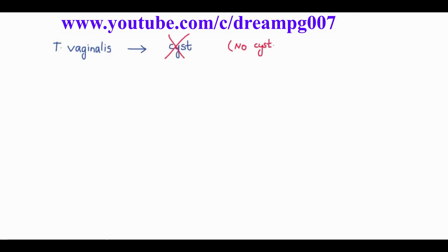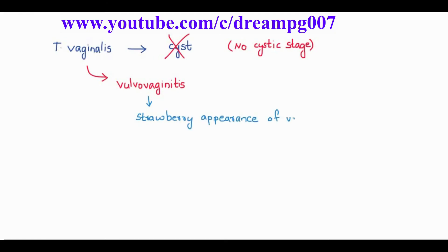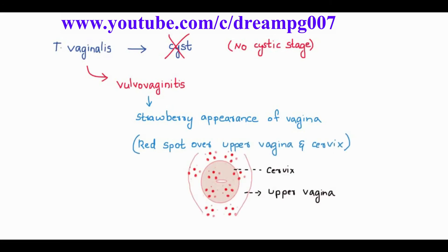Trichomonas vaginalis does not have a cystic stage. The trophozoietic stage of trichomonas vaginalis causes vulvovaginitis. It is characterized by a strawberry appearance of the vagina. Here we can see red spots over the upper vagina and the cervix, better visualized with the help of a colposcope. It is also characterized by green frothy discharge from the vagina.